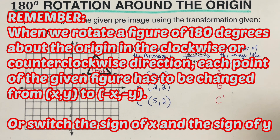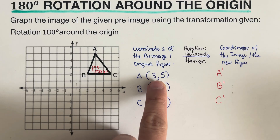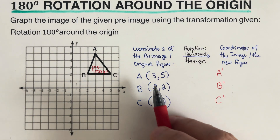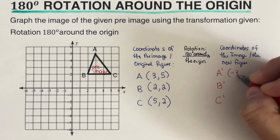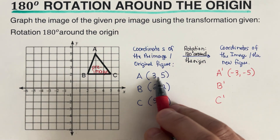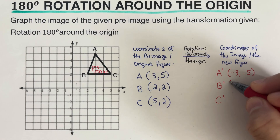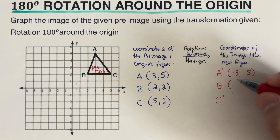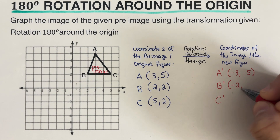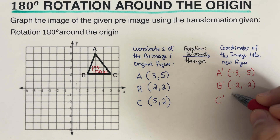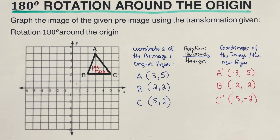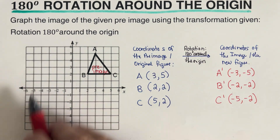Applying the rule: for A at (3, 5), we switch both signs to get A prime at (-3, -5). For B at (2, 2), both are positive so B prime is (-2, -2). For C at (5, 2), C prime becomes (-5, -2). Now we'll plot these points on the graph.